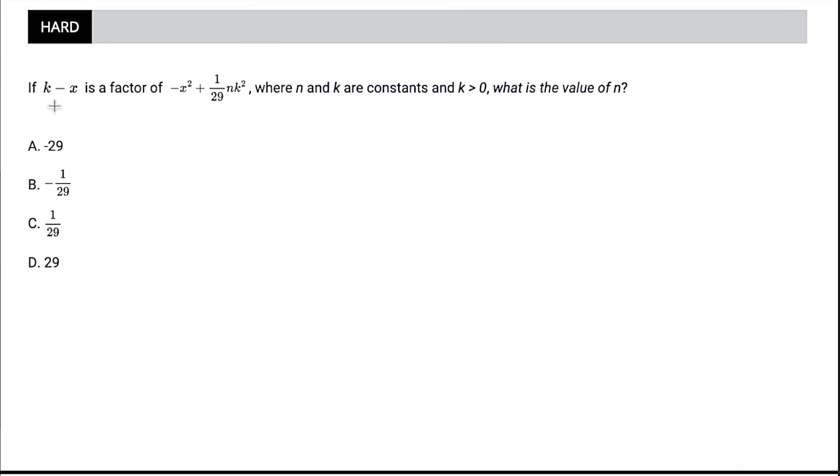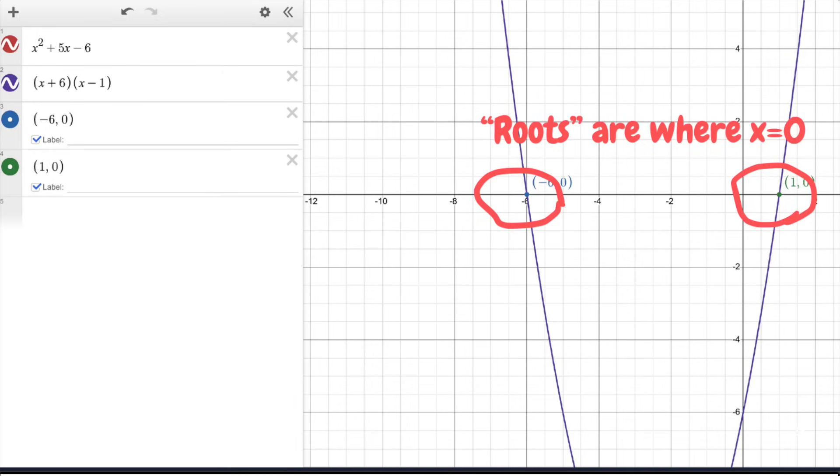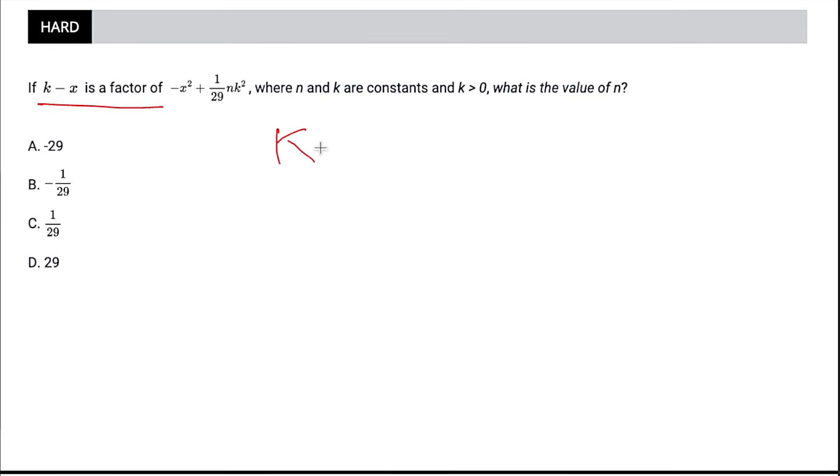Instead, let's do things our own way. All we have to remember is anytime it tells us something is a factor of an equation, that means that we are basically looking at a root. So when you think about any sort of quadratic or polynomial, if k minus x is a root, aka a factor, that means it is equal to 0, which means x is equal to k, at least one of the values of x is. So we can plug k in for x, and then we can plug in 0 for y.